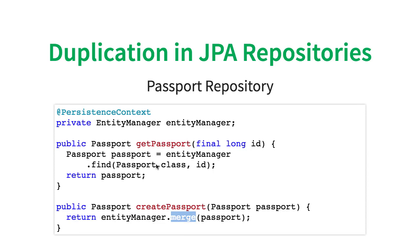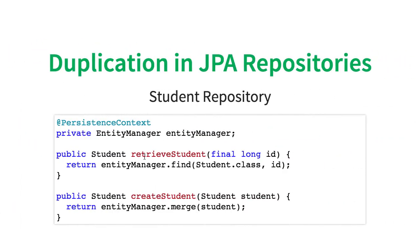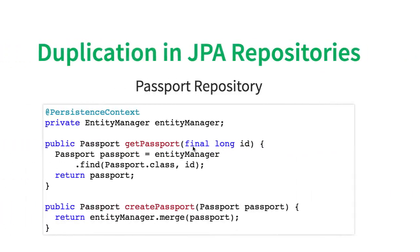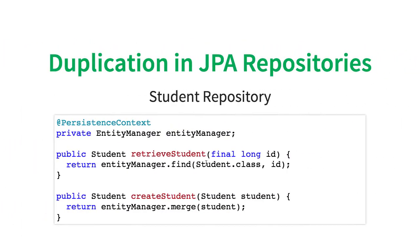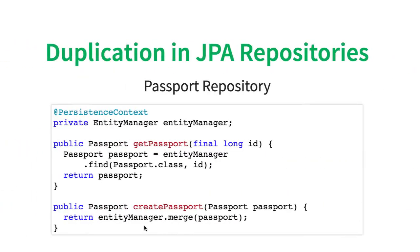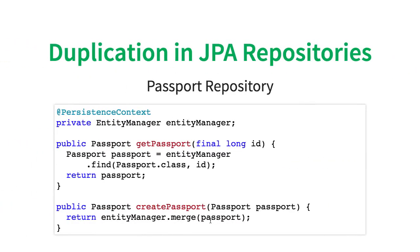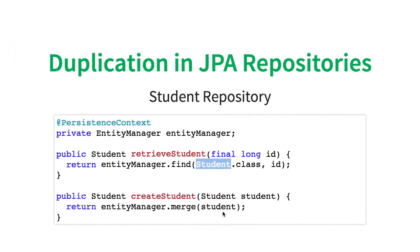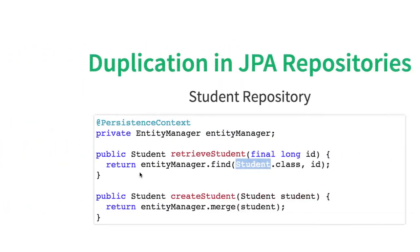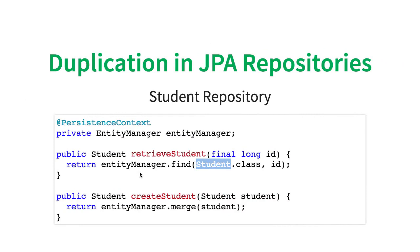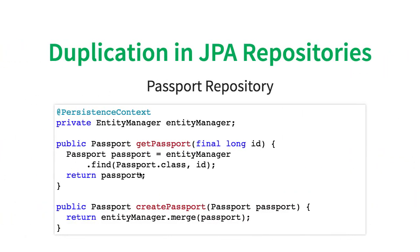Let's say instead of the passport, I would want to handle a student. What would I need to do? I would write very similar code — instead of passport.class, I would pass student.class. Instead of entity manager.merge passport, I would say entity manager.merge student. If you look at it, actually all the methods would be very, very similar.